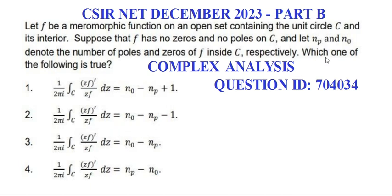The argument principle says that if N_0 and N_p denote the number of zeros and number of poles of f inside C, where f is a meromorphic function, then this one is true: 1 over 2πi integral over C